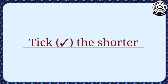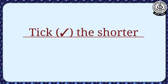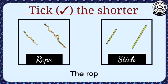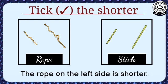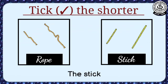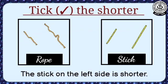Tick the shorter. The rope on the left side is shorter. The stick on the left side is shorter.